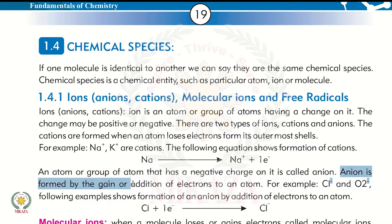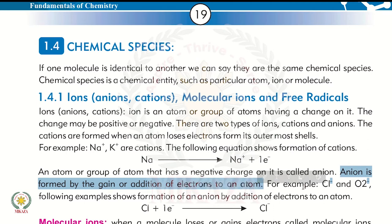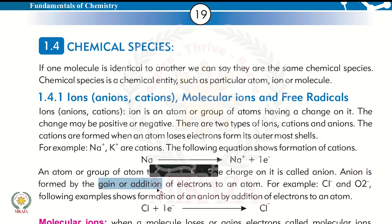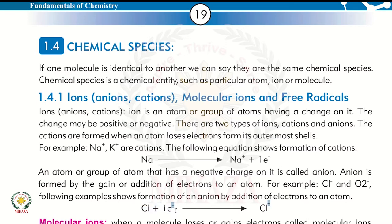An anion is formed by the gain or addition of electrons to an atom. For example, if there are four electrons and four protons and the atom gains one electron, it will have five electrons but still four protons. The negative charge increases, so it becomes negatively charged. This is called an anion — for example, chloride has a negative charge of one electron.